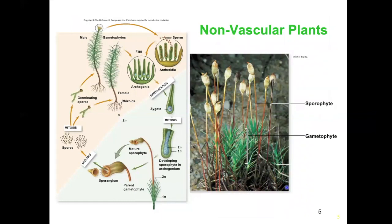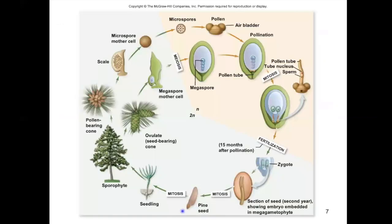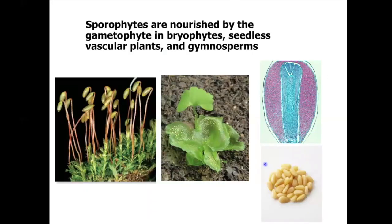To see how the alternation of generations looks in different species — here in the non-vascular plants, the bryophytes, we've got our dominant gametophyte stage and the sporophyte eventually attached to and dependent on it. Likewise, we see the seedless vascular plant life cycle showing the same general pattern. The gymnosperms show how, even with the dominant sporophyte phase, we do have our gametophyte, which will eventually be part of the seed and nourish the embryo. An important theme in all three groups is that the sporophyte phase at some point is nourished by the gametophyte.